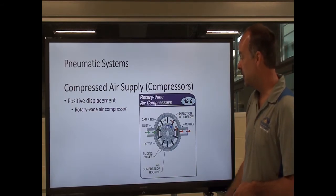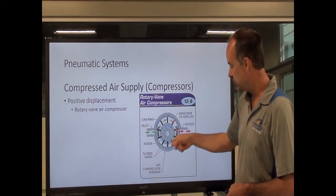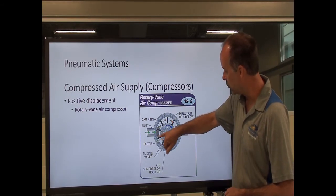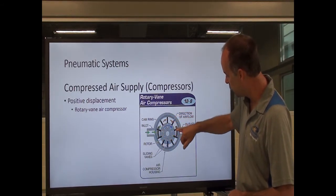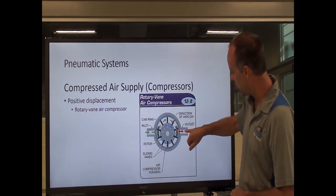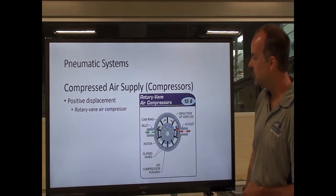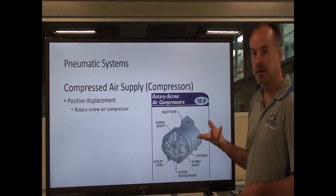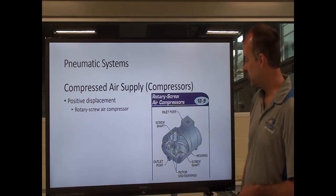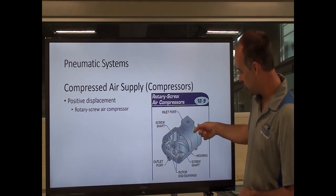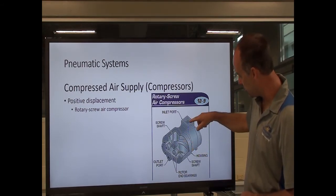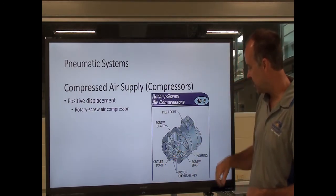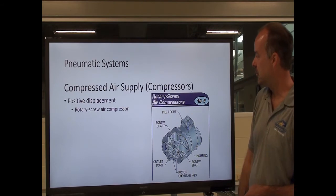A rotary vane air compressor — much like a vane hydraulic pump, it's the same principle. We have a spinning hub with our vanes; we draw air in and as it spins around to our outlet, we're compressing it and sending it out to our receiver. The rotary screw type is kind of like a gear pump in hydraulics, but it uses two spinning screws that actually draw air in and compress it — air comes in here, gets compressed, and comes out here. Just another form of air compressor.